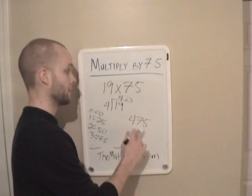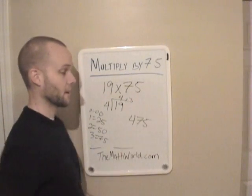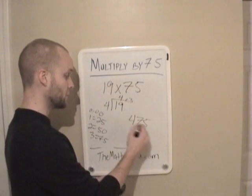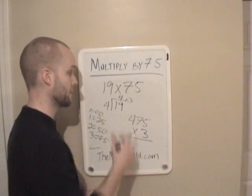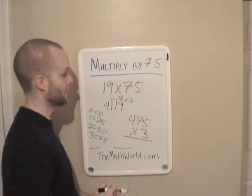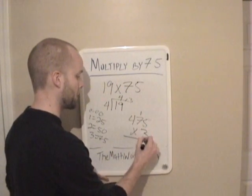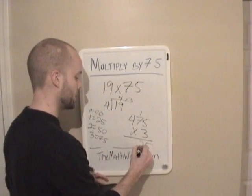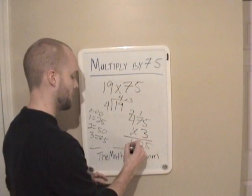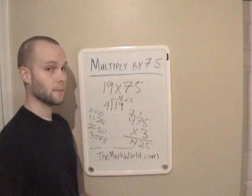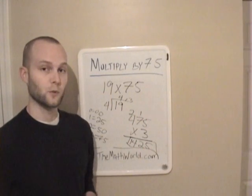And then once you get this answer, this 475 would be 19 times 25. But since you're multiplying by 75, you just take 475 and multiply this entire number by 3. And this will give you 19 times 75. So 475 times 3, 5 carry your 1, 21 plus 1, 2 carry your 2, 4 times 3 is 12, 14. So 19 times 75 is 1,425.